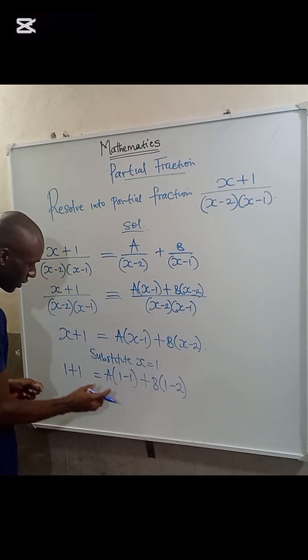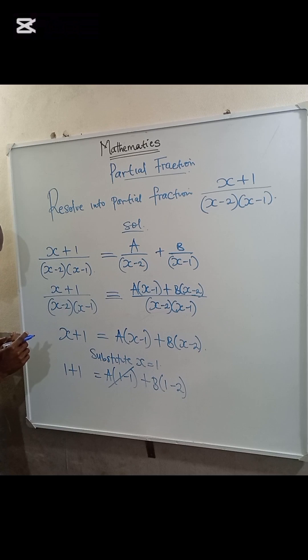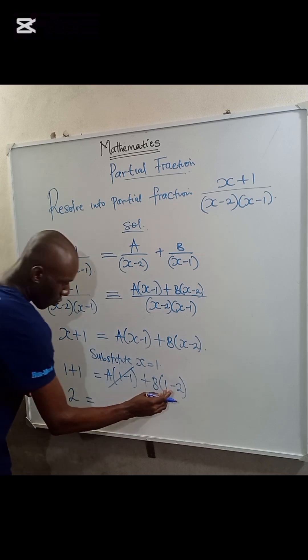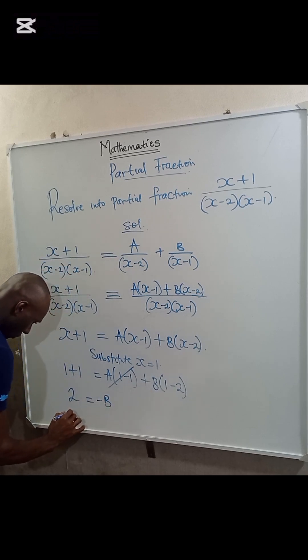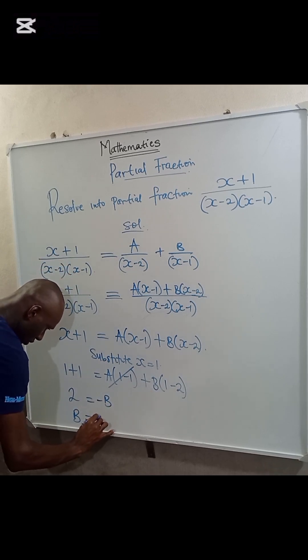1 minus 1 is 0. 0 times A is 0. Here we have 1+1 equals 2 equal to 1 minus 2 is minus 1 times B, which is minus B. Therefore, B is equal to minus 2.